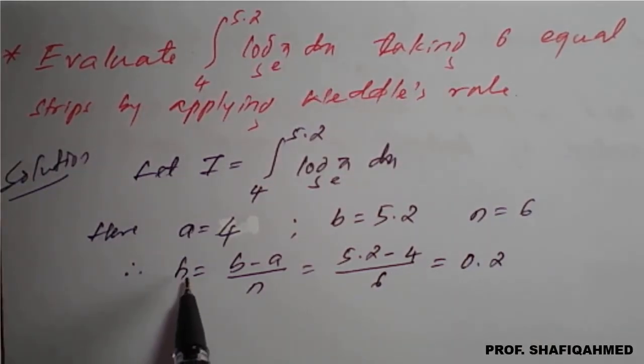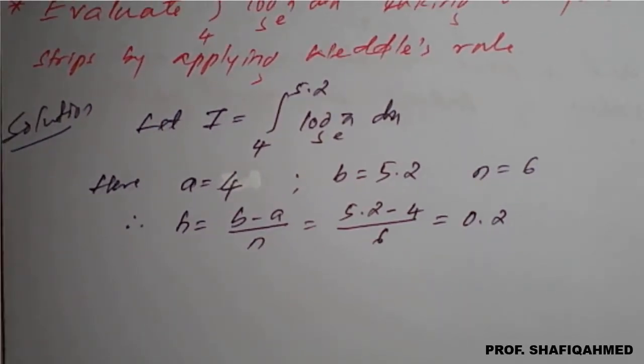We have the h value, a value, b value, and n value. Now we will construct a table with the values of x and y.